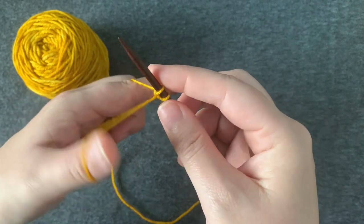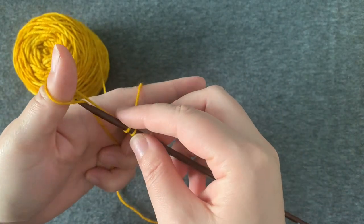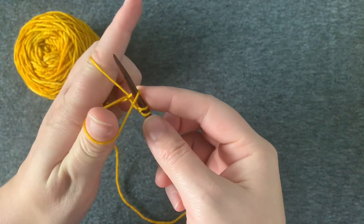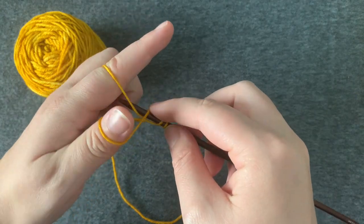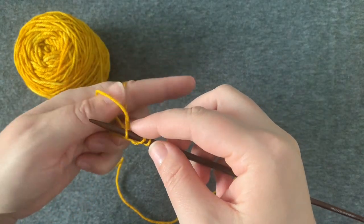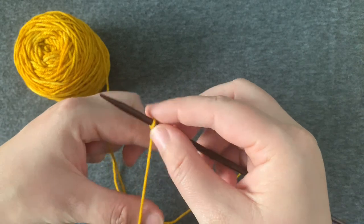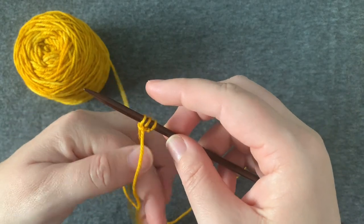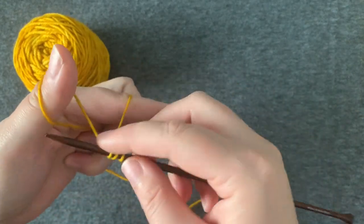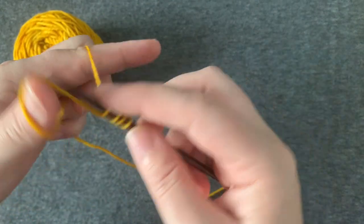And you're going to repeat that step. So you're going to go under the one on your thumb, over the one on your index finger, and through. And you're going to repeat that until you've got the desired number of stitches on your needle.